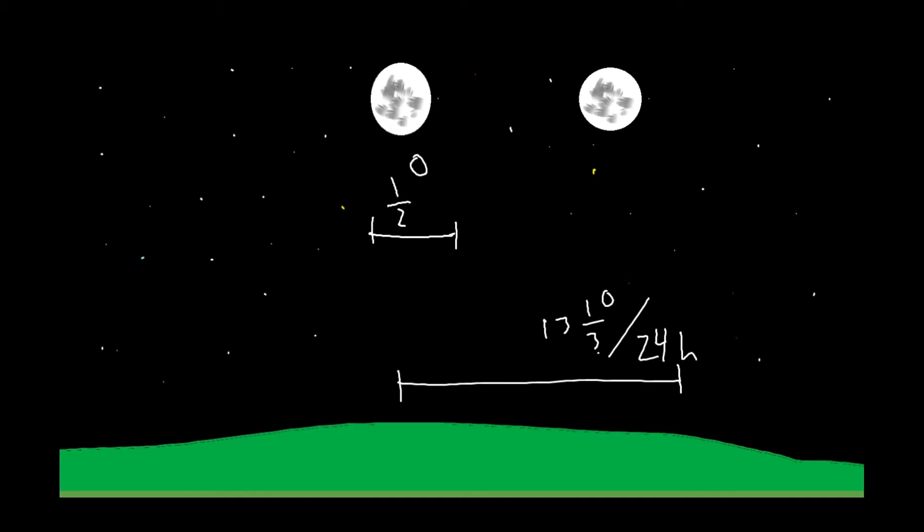When we divide the time it takes for the moon to cross the Earth's shadow in terms of how we see it on Earth, we get this equation where the time of the eclipse or the time in the Earth's umbra divided by 13 and a third divided by 24 all over that divided by one-half equals the number of moon diameters fitting in Earth's umbra.